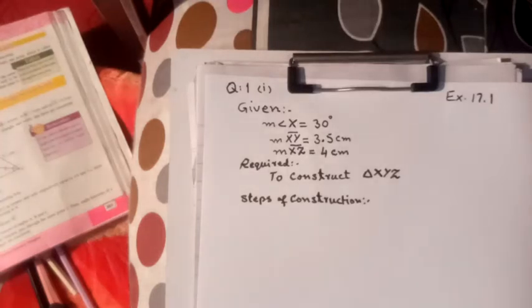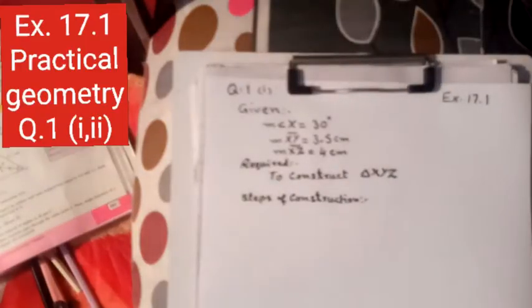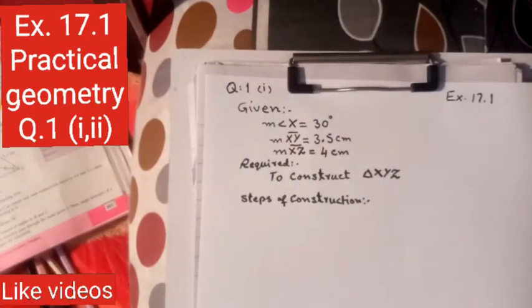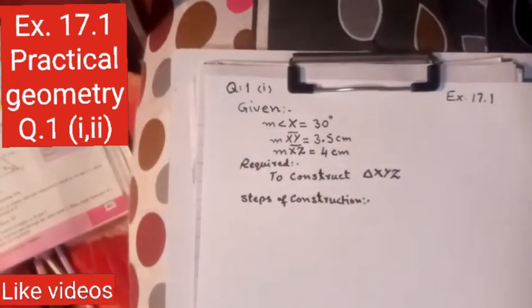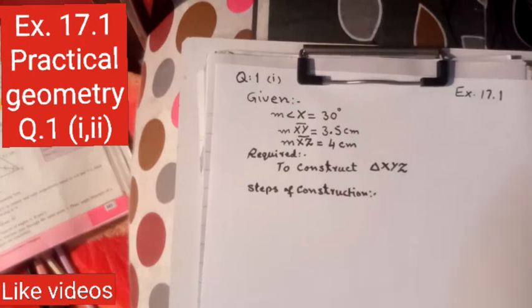In the 9th class of Maths, we are going to start Practical Geometry, Exercise 17.1. Question number 1 is to construct a triangle XYZ for the following given assumptions.